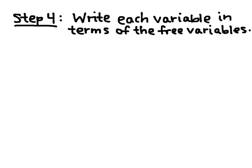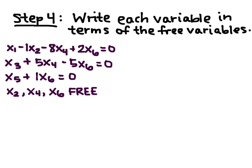Next step is to write each variable in terms of the free variables. So, here's my system that I got from the last slide. What I'm going to do is that first line, I'm going to move everything to the right. So, I get X1 equals 1X2 plus 8X4 minus 2X6.